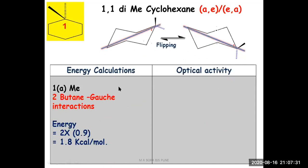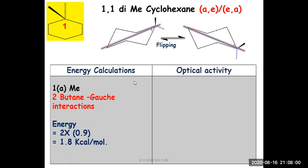Regarding optical activity of 1,1-dimethylcyclohexane: all carbon atoms except the first are CH₂ groups, so there is no chiral center. The first carbon has two methyl groups attached, meaning there is no chirality. This molecule is highly symmetric and therefore optically inactive due to a plane of symmetry. It does not exist in any geometrical isomeric form — this is the only molecule.